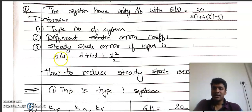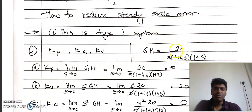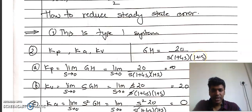For determining the static error constants, we need the open loop transfer function, that is G·H. What is G·H here? H is nothing but unity feedback, so G·H will be equal to G. So it will be 20 / [s(1+4s)(1+s)].